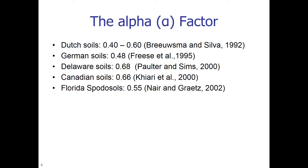The alpha factor is representative for different soils. For Dutch soils the alpha factor is 0.4 to 0.6; German soils, about 0.48; Delaware soils, 0.68; Canadian soils, 0.66; and Florida Spodosol soils, 0.55. They are all pretty close to around 0.5. Therefore, several more recent studies use an alpha factor of 0.5 irrespective of where the soils are obtained, because calculation of these alpha factors is a time-consuming job.